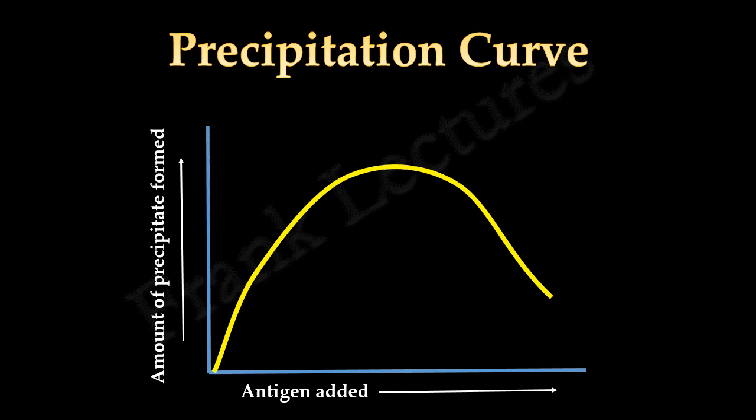This curve shows how the amount of precipitation varies with varying concentration of antigen. Here you can see that as the amount of antigen added increases, the amount of precipitate also increases, but up to a certain peak. After that the amount of precipitate decreases with increasing amount of antigen.